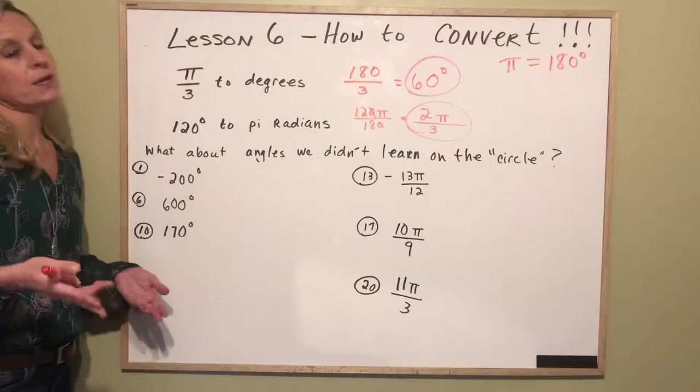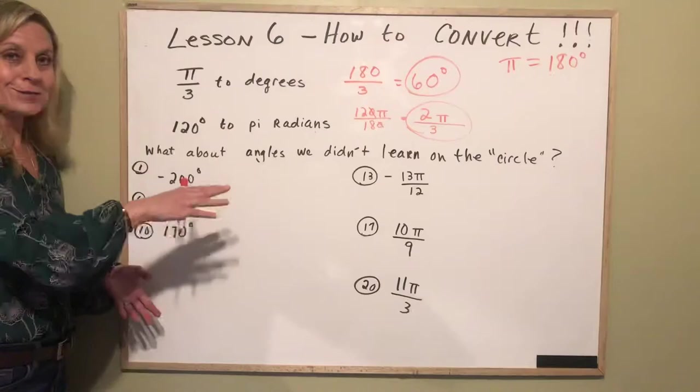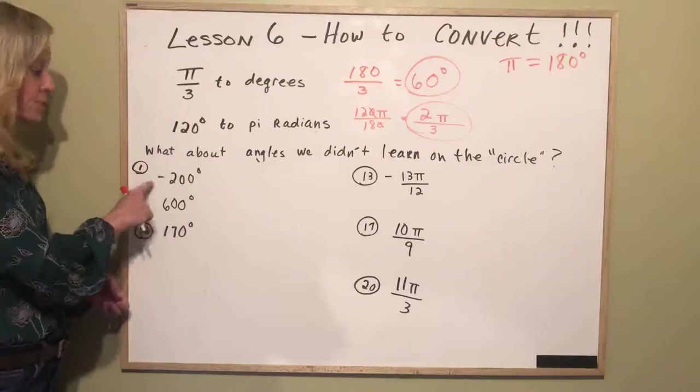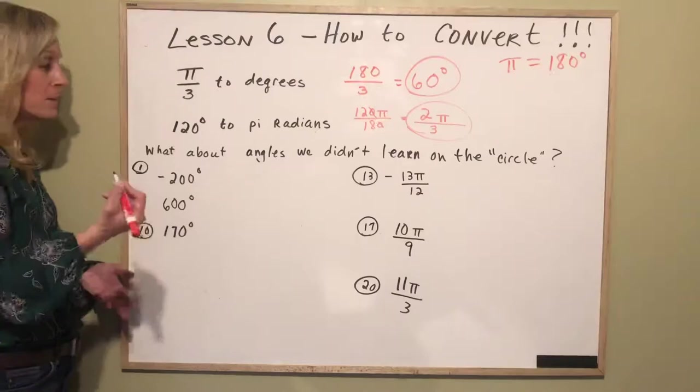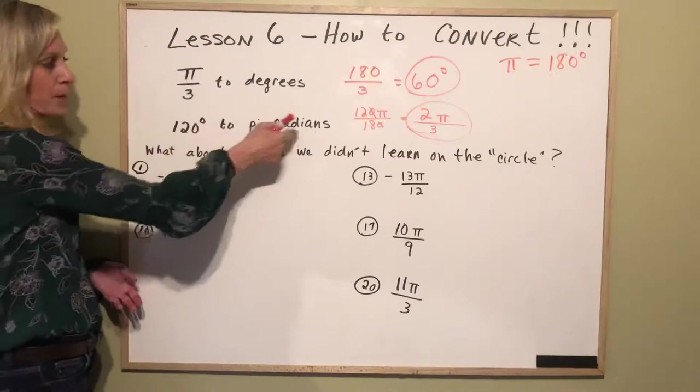Now these are numbered because I have a worksheet up for you on Schoology 1 through 20. So if you pay attention to the video you get six free answers today. I'm going to use them as examples. I chose number one because it's a negative and I don't want you to be confused if there's a negative in front. You just keep the negative and you do what you did up here with degrees to pi radians.